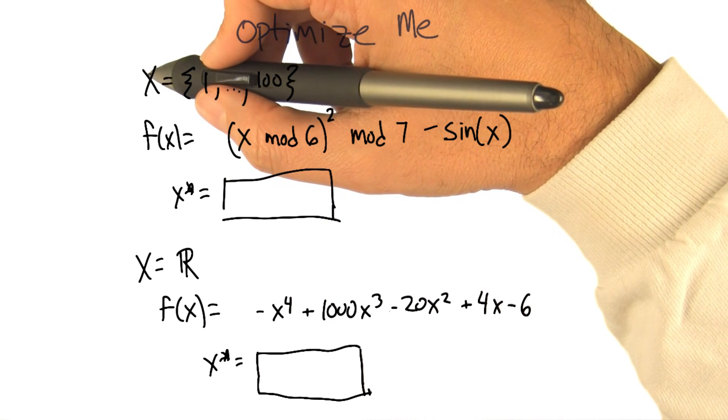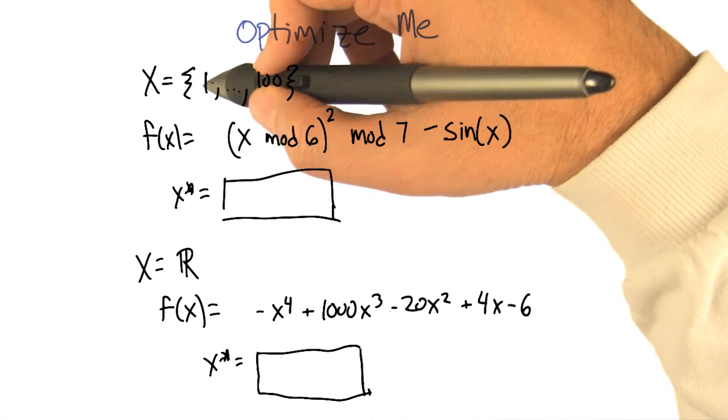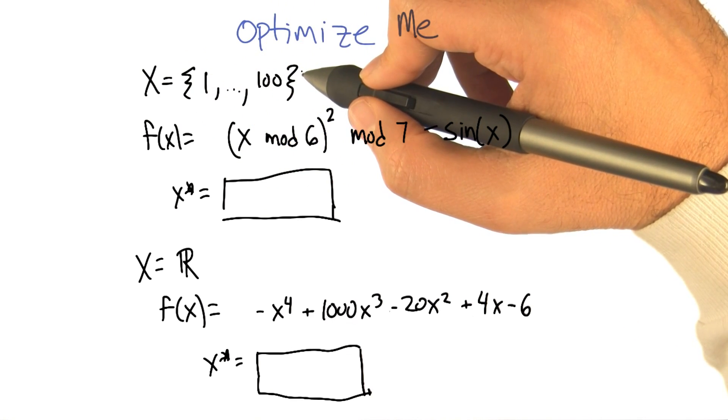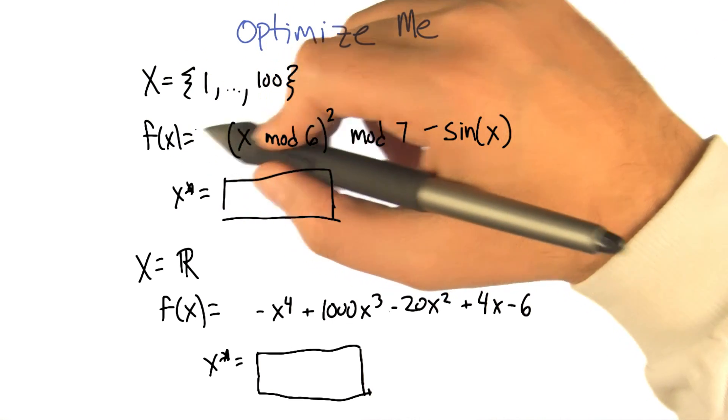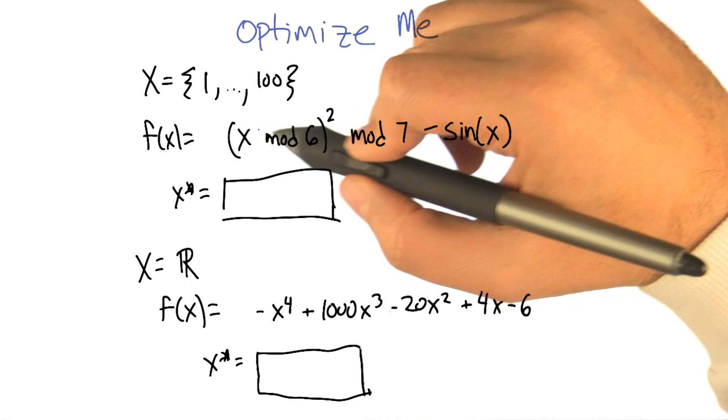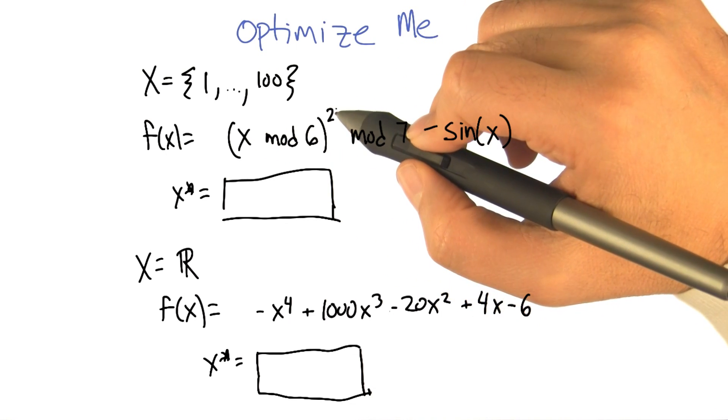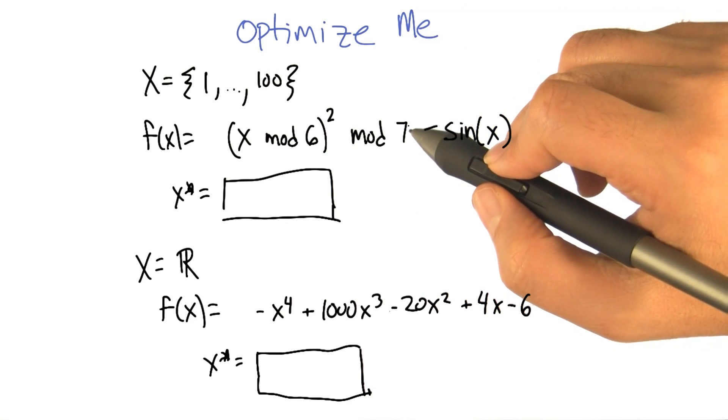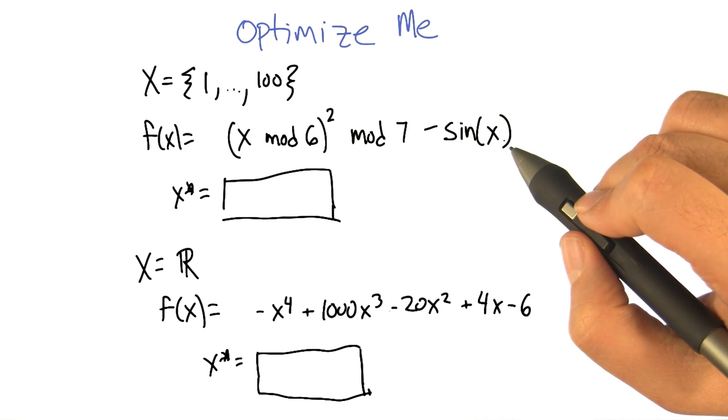So the first question, we've got the input space x is the values 1 to 100. And the function that we're trying to optimize is x mod 6 squared mod 7 minus the sine of x. Holy cow. Yeah, it is an awesome looking function.